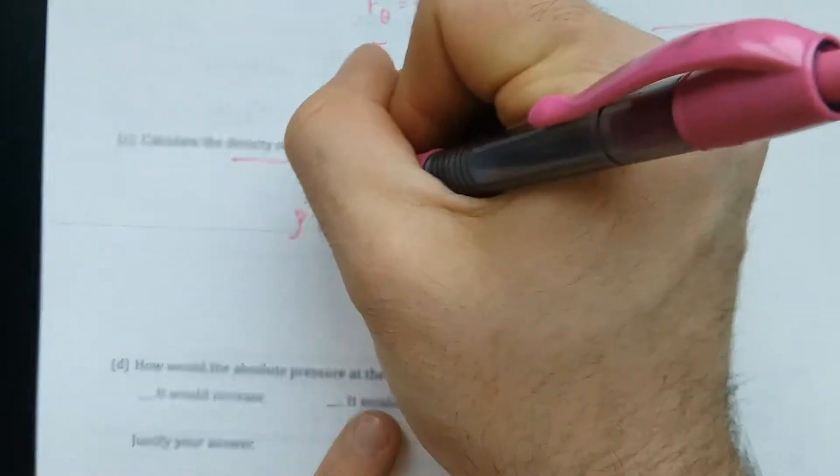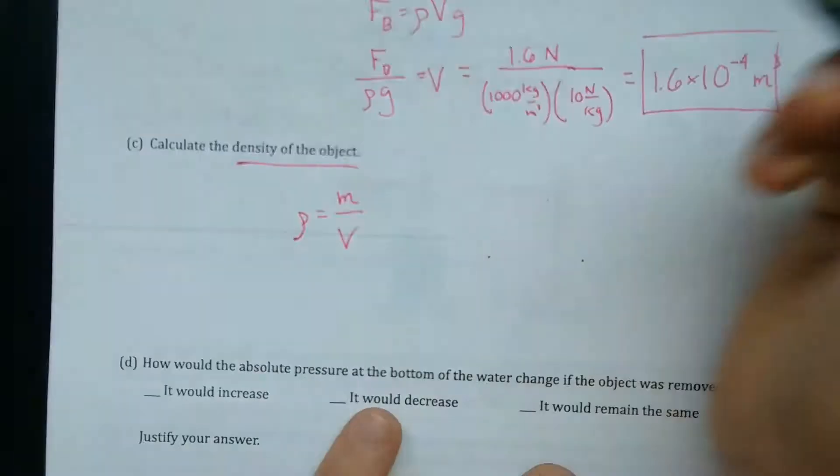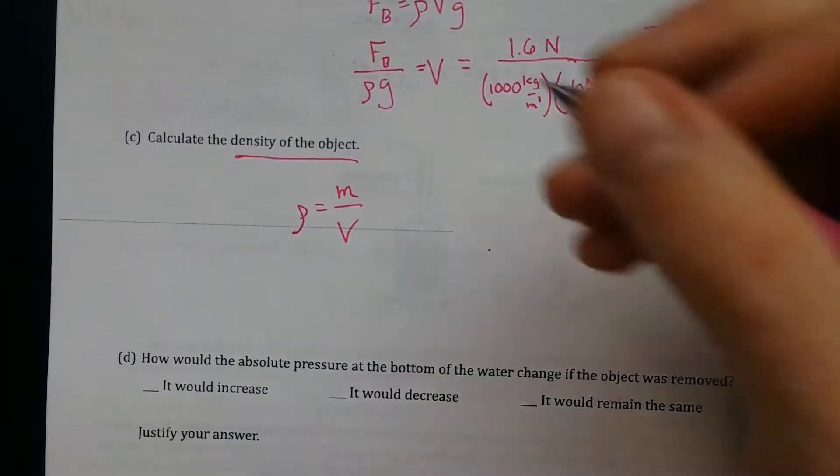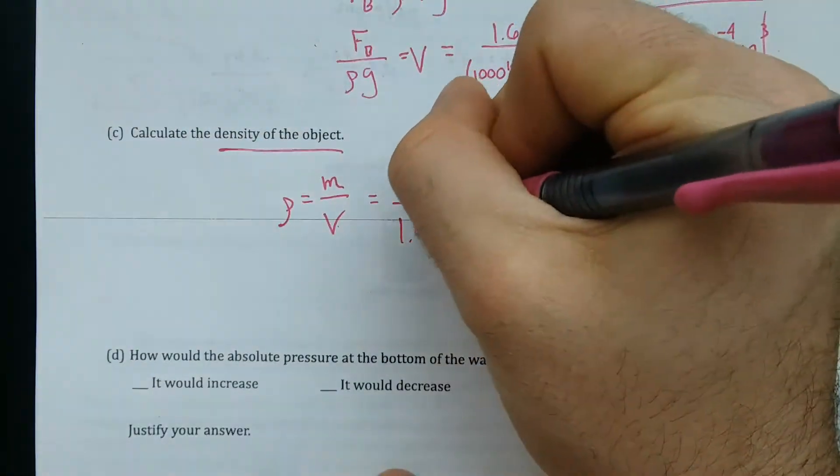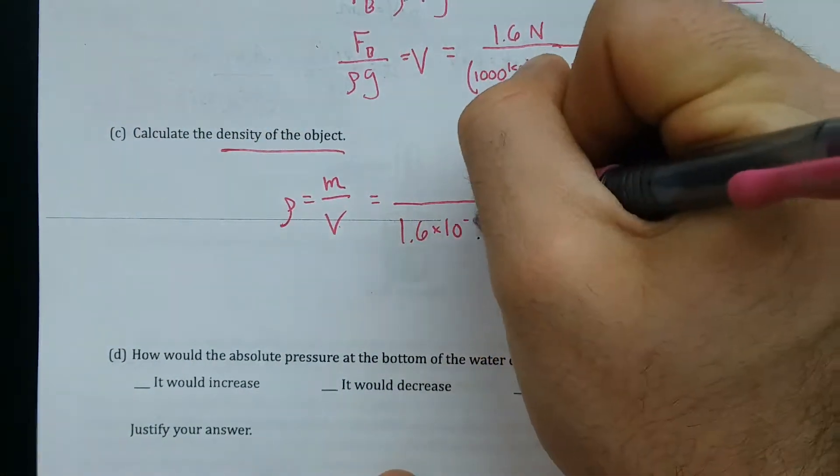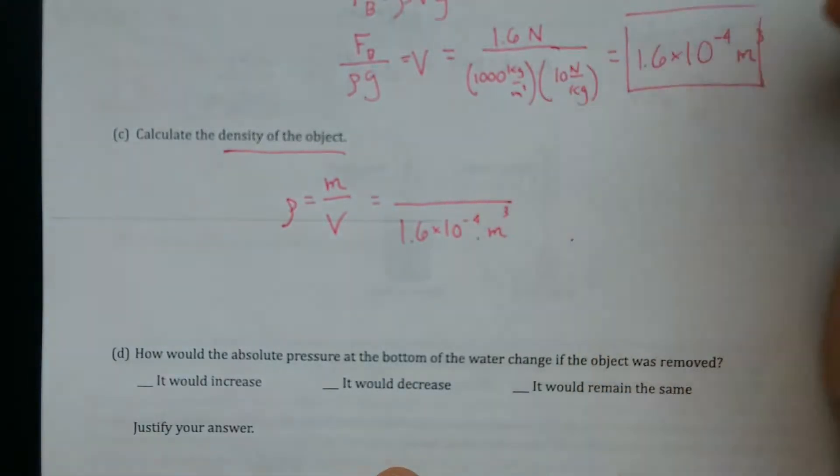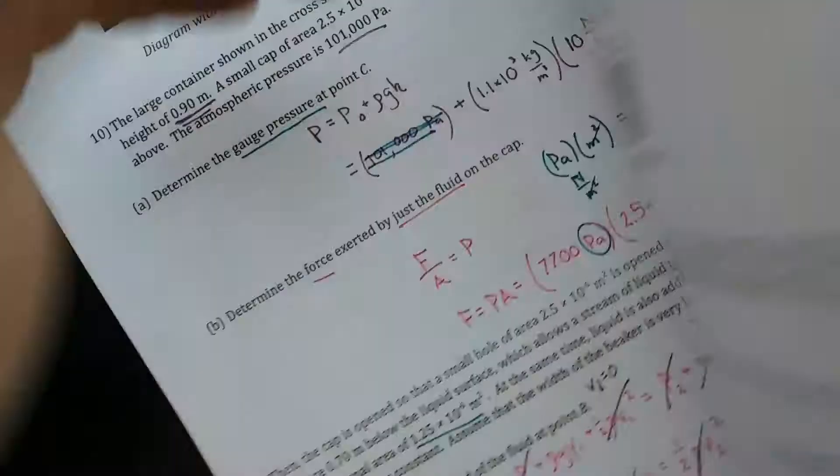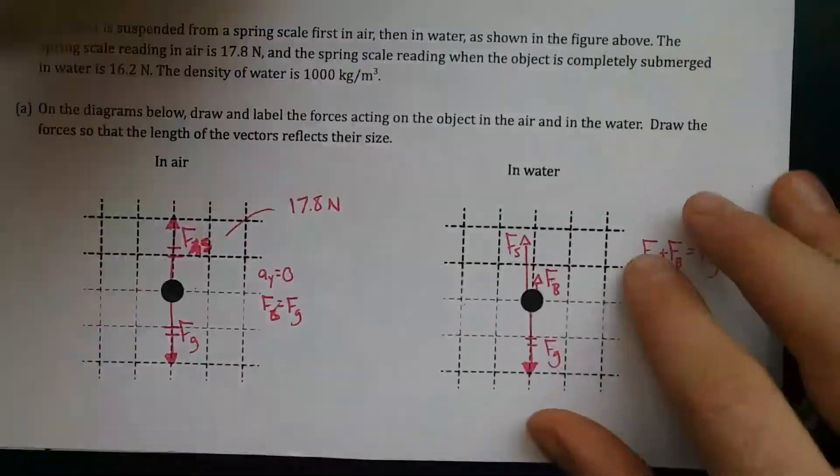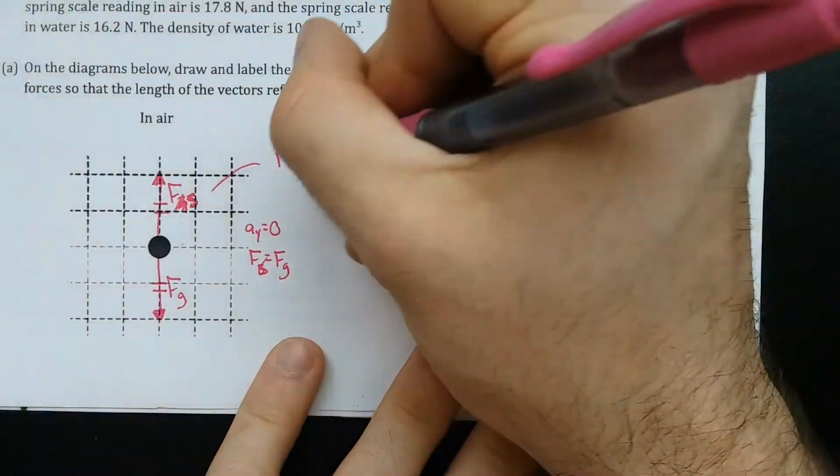Calculate the density of the object. Got to use this idea. I need the mass of the object and the volume of the object. And I have the volume of the object, 1.6 times 10 to the negative 4 meters cubed. And I have M because it's what I said before. A good picture answers everything.